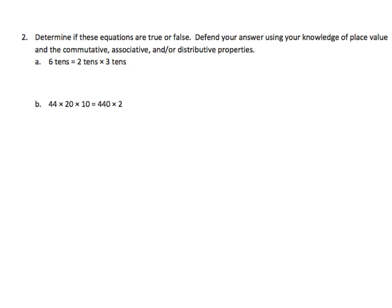Let's read our instructions. Determine if these equations are true or false. Defend your answer using your knowledge of place value and the commutative, meaning we can change the order of the factors. Associative, means we can group the factors any way we like. And or distributive properties. And we can get into that a little bit.